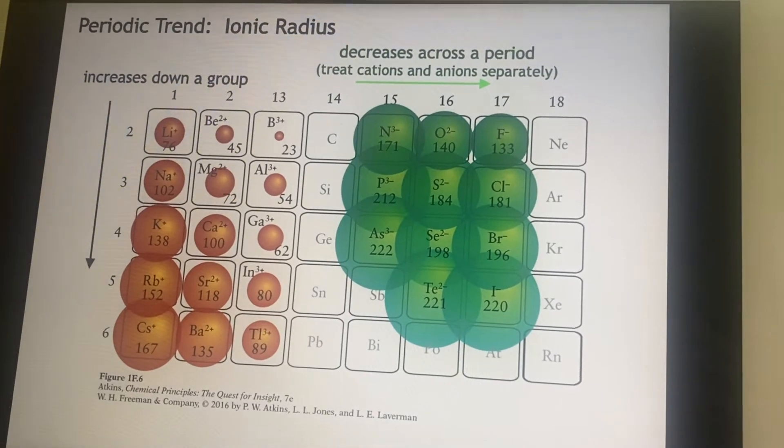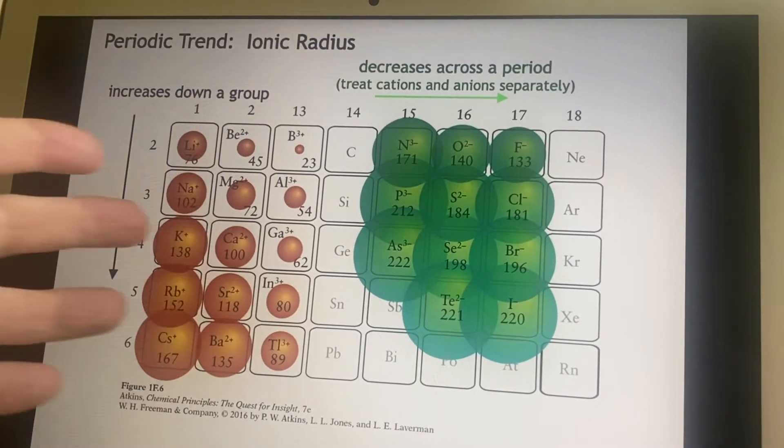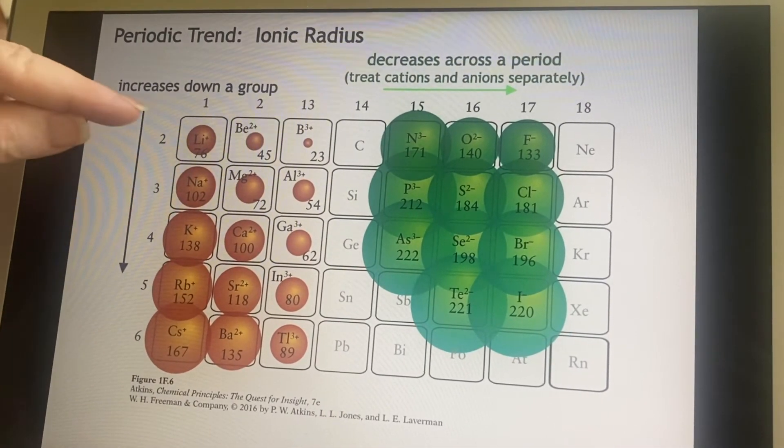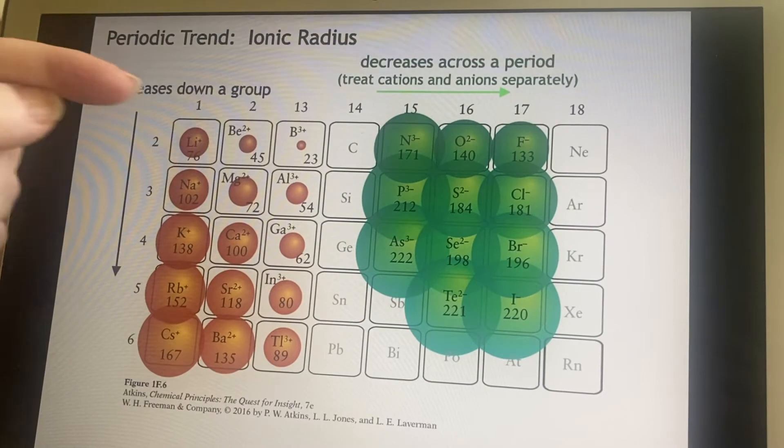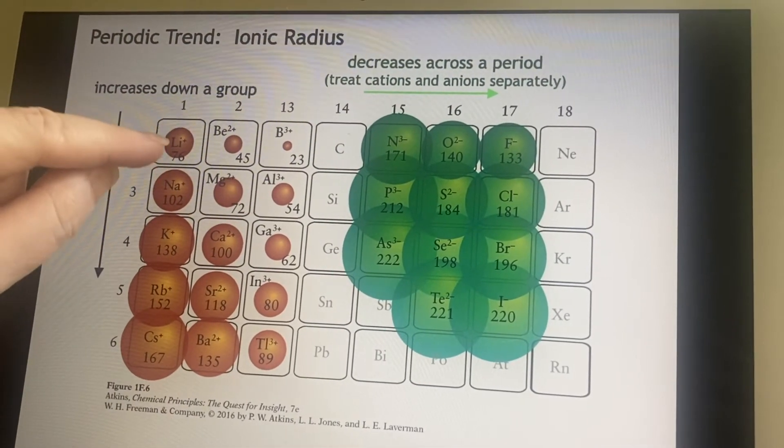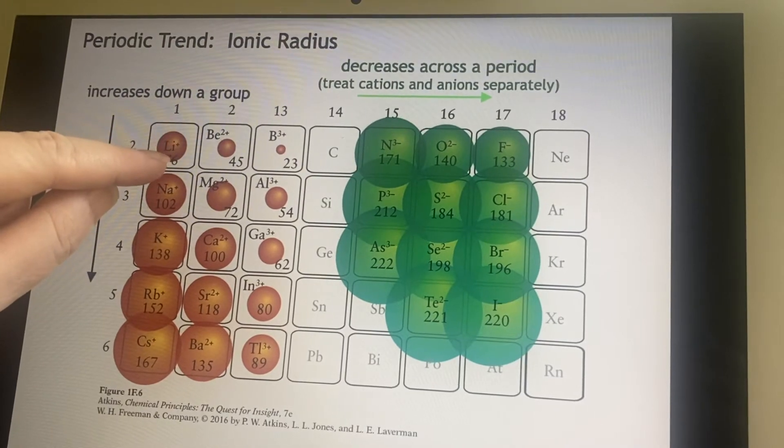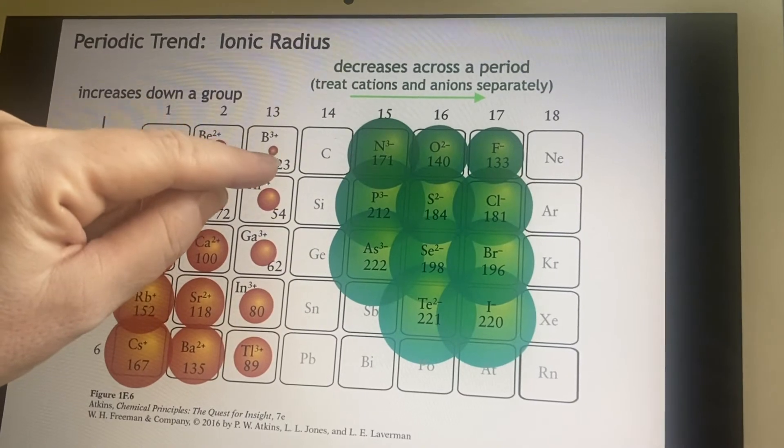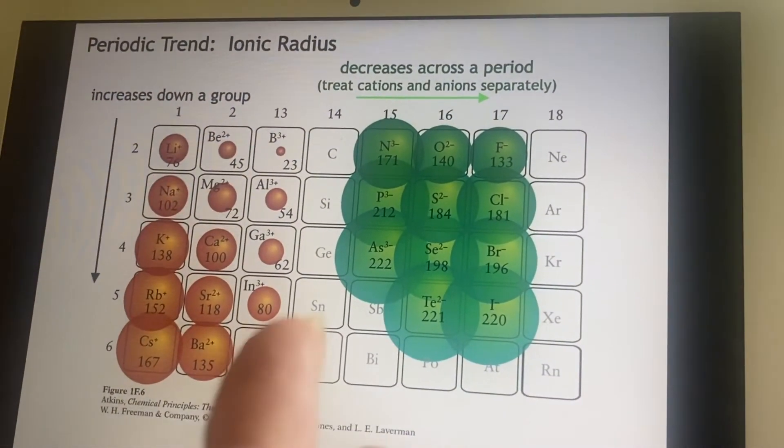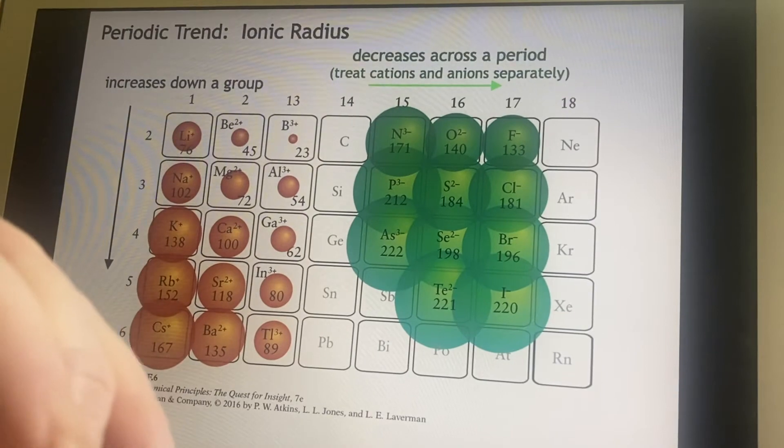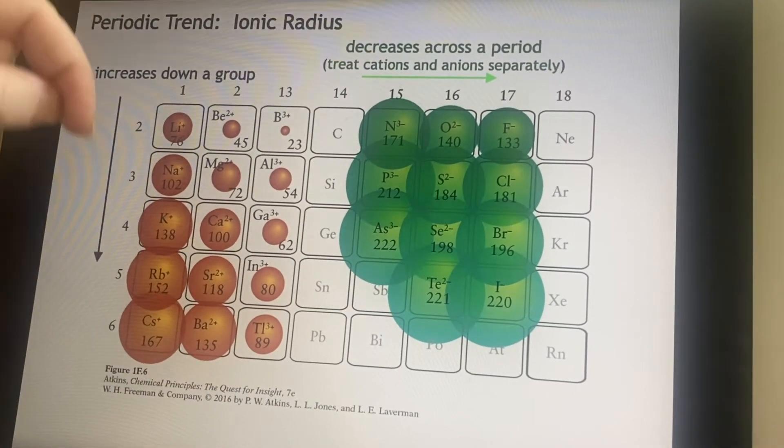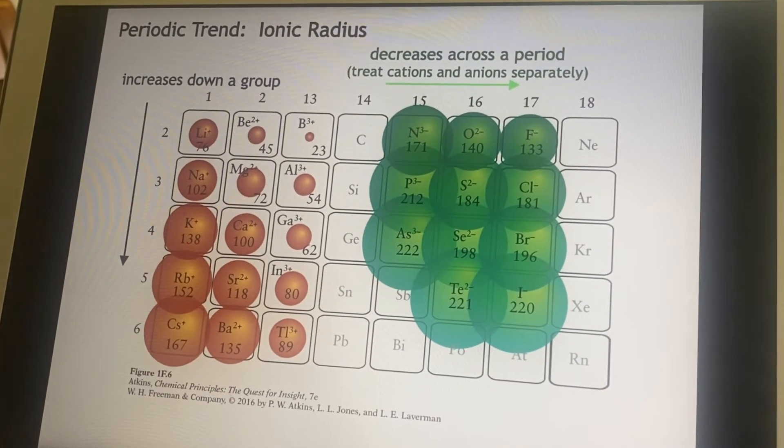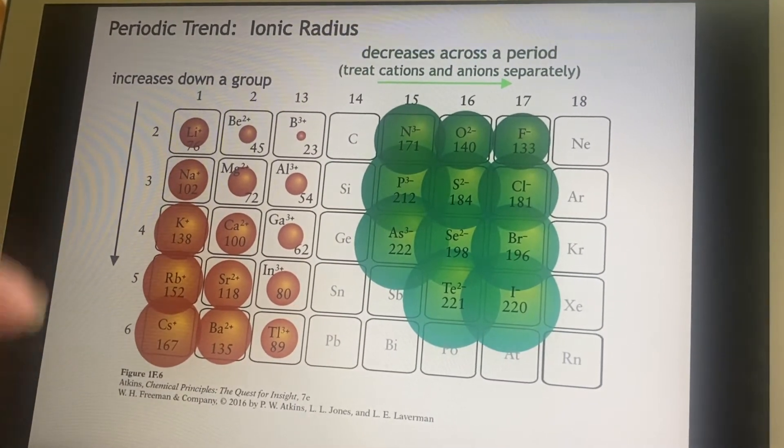And then we can go and look at the other ones, the cations, the positive ions, and we see the same thing: it still gets smaller as you go across the period. Why? Because here you had one more proton than electrons; by the time you get over here, you have three more protons than electrons. It continues to create more and more control, keeping those electrons close. Increasing down a group is really no surprise—you just have a larger grouping, and it was larger to begin with, so why wouldn't the ion also be larger?